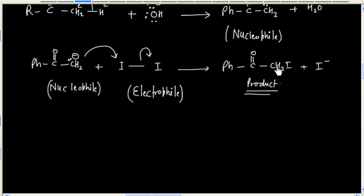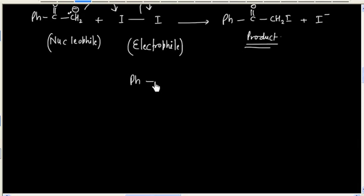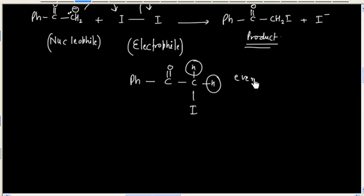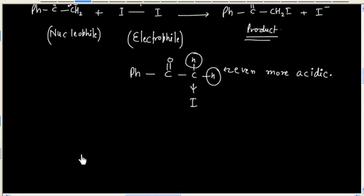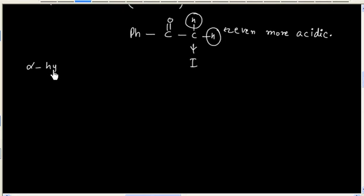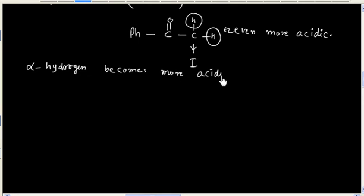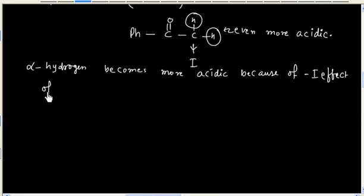The product formed still has alpha-hydrogen, and this hydrogen is even more acidic. The reason is that iodine will show a minus I (inductive) effect, so the alpha-hydrogen becomes more acidic because of the minus I effect of iodine.